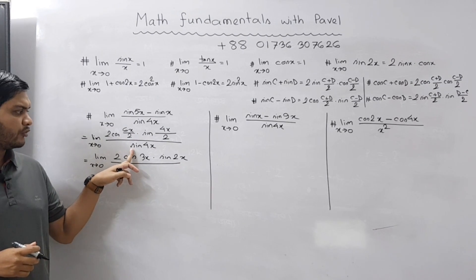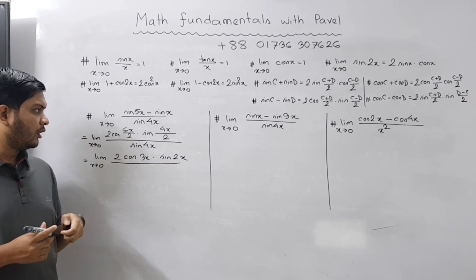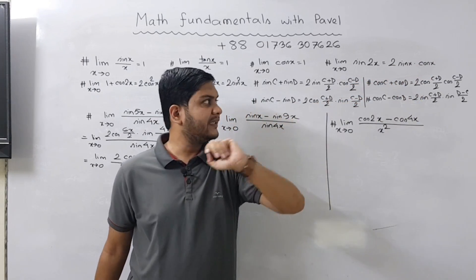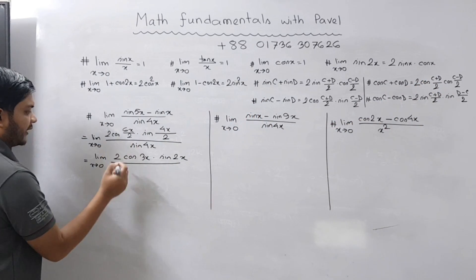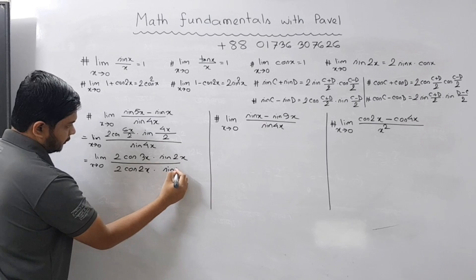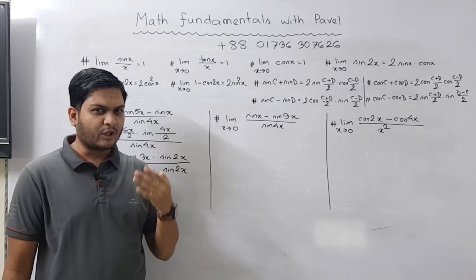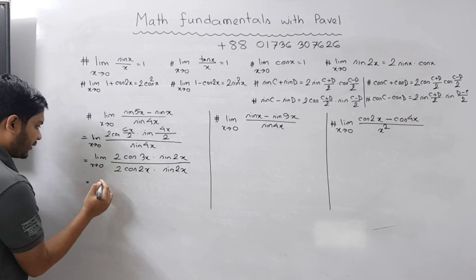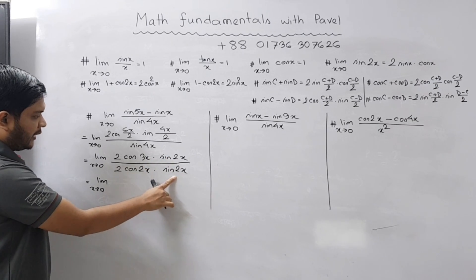In the denominator we have sin 4x but in the numerator we have sin 2x — the theta is double. We can apply the double angle formula: sin 2x equals 2 sin x cos x. So sin 4x becomes 2 cos(2x) sin(2x). Now sin 2x and sin 2x cancel out, and the two 2s cancel out as well.